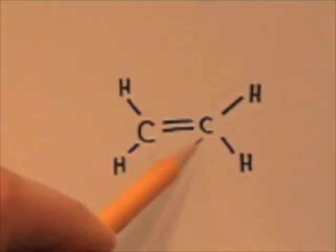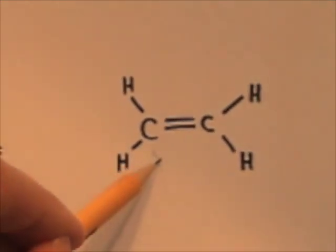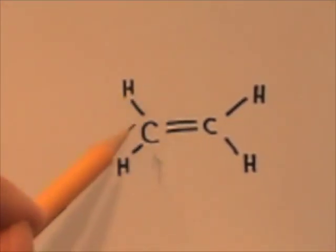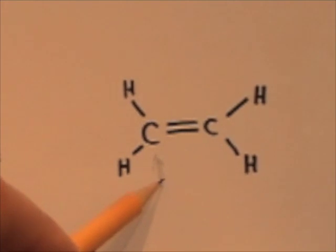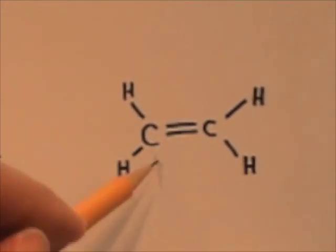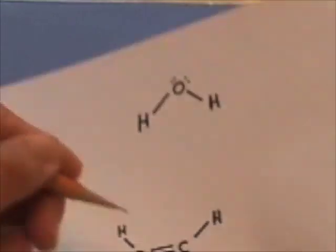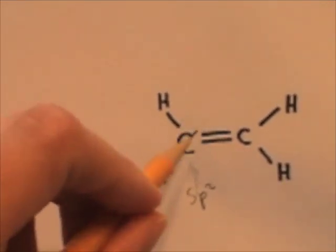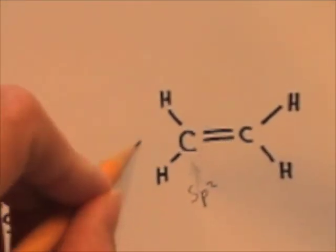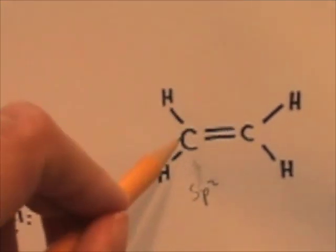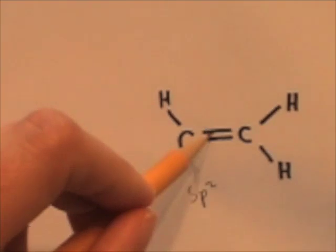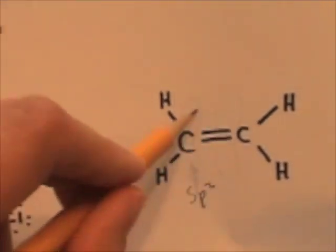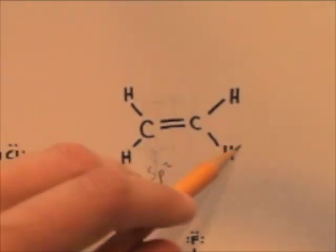In this molecule there are two central carbons, so we'll look at them one at a time. This central carbon has three electron regions getting as far away as possible, so it's a 120 degree bond angle, sp2 hybridized. We predict 120 degree bond angles between this carbon, the hydrogens, and the adjacent carbon — where there are three sigma bonds and one pi bond. The pi bond occurs with the p orbital overlap above and below the plane of these atoms.